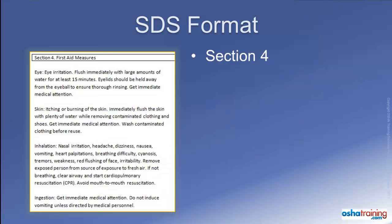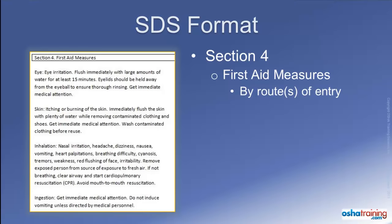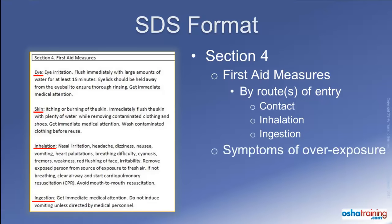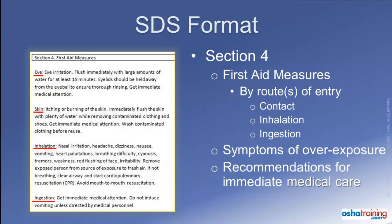Section 4 on a safety data sheet describes the initial first aid measures that should be administered by responders to anyone who has experienced a chemical exposure. This information includes a list of aid for different routes of exposure, such as contact with eyes or skin, inhalation, or ingestion. Also included will be a description of the most common symptoms of overexposure, including those which are acute or delayed, and recommendations for immediate medical care and special treatment that may be needed in severe cases.